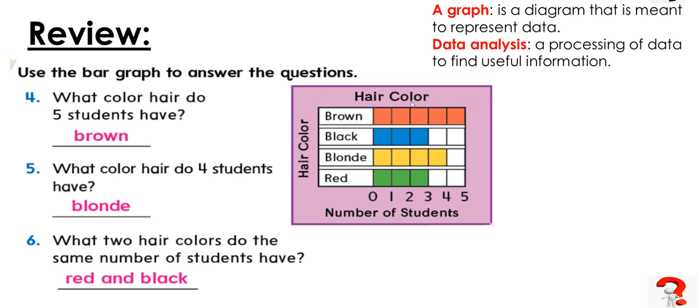Now let's see. The question says, 'What color hair do five students have?' We know that this bar graph is talking about hair color - this is the title. So when we read the title, we know what the people are voting for. They asked students about their hair color: brown, black, blonde, and red.